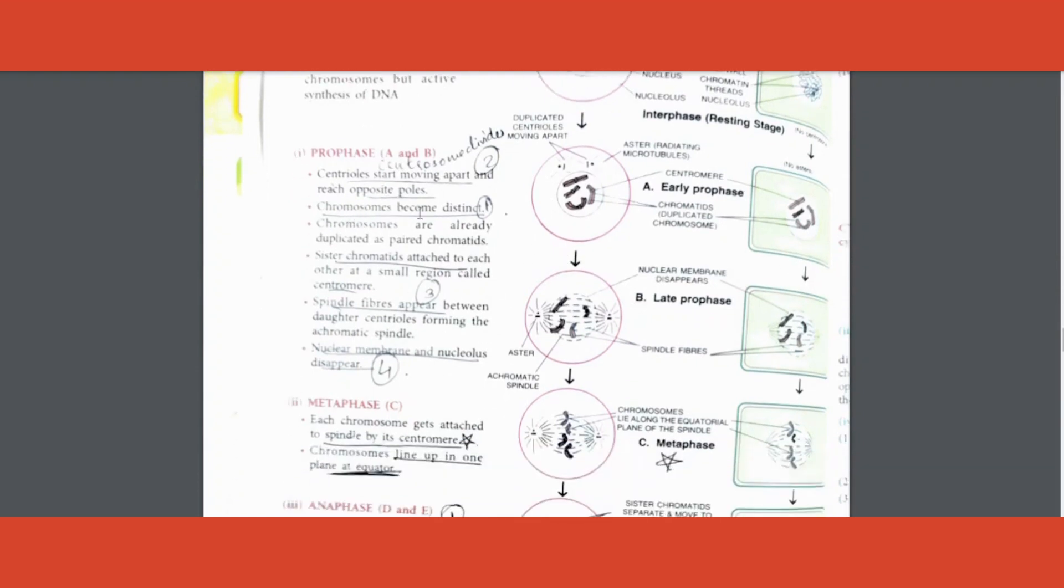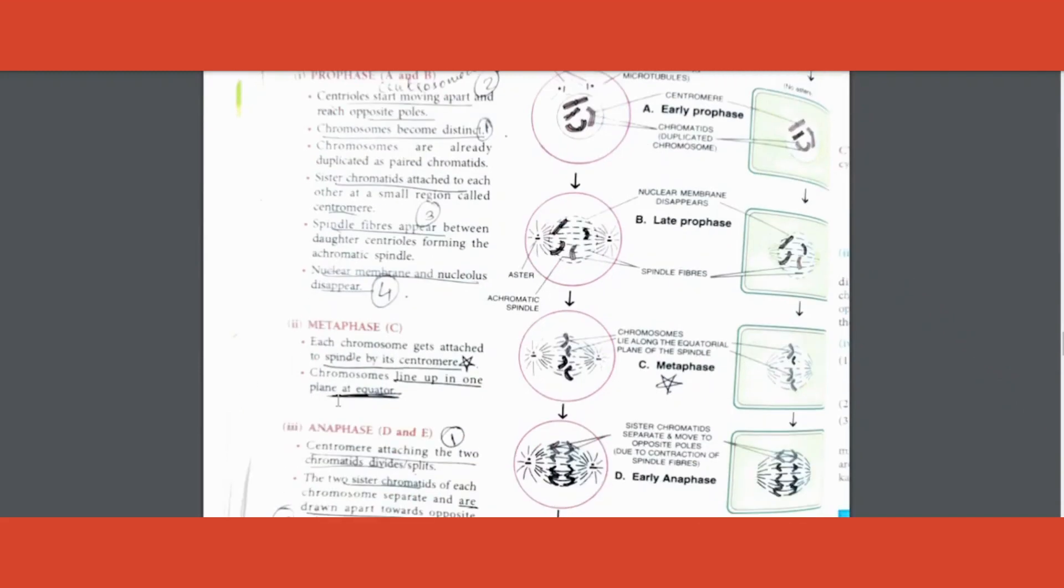Prophase - what are the important points? First and foremost, chromosomes become distinct. Sister chromatids are attached to centromere. Spindle fibers appear. In both cases you can write nuclear membrane and nucleolus disappear. Four points you write.